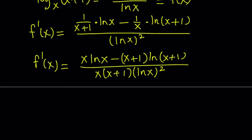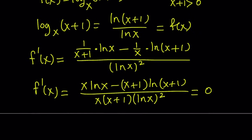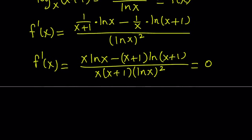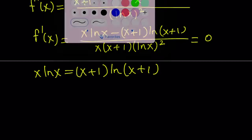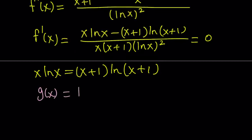We're going to find the critical points of f by setting the derivative equal to 0. Since x is positive and different from 1, the denominator is never 0. Setting the numerator equal to 0 gives us the equation x·ln(x) = (x+1)·ln(x+1). To analyze this, let's introduce another function: let g(x) = x·ln(x).